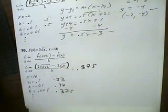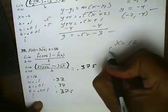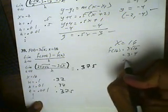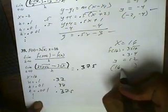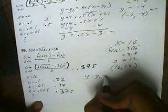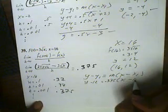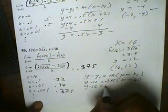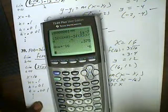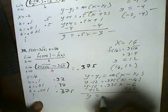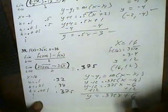We need a point as well as a slope. Since X is 16, we're going to put 16 into the function and get 3 times the square root of 16. The square root of 16 is 4, 3 times 4 is 12, so Y is 12. The point is 16 comma 12. Using the point-slope formula, with the opposite of Y being negative 12, slope 0.375, and the opposite of X being negative 16, I distribute 0.375 times negative 16 to get negative 6. Adding 12 to both sides, the linear equation is Y equals 0.375X plus 6.